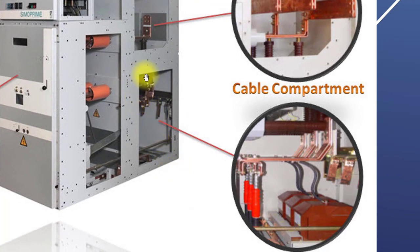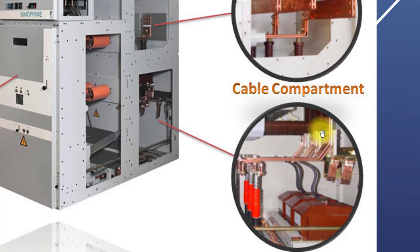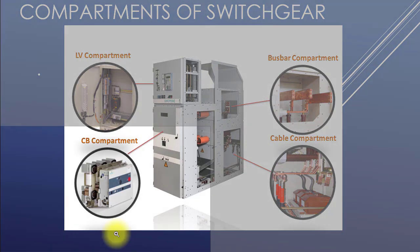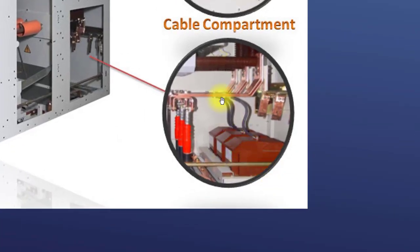Below the bus bar compartment you can see the cable compartment. This is where the cable is brought in — a feeder that could be an incoming feeder or outgoing feeder. Here you can see the cable is inserted and connected to the circuit breaker. These three VTs are connected to the cable side.